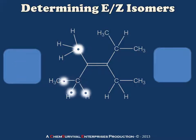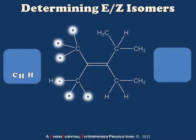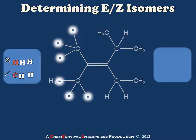Since there's a tie, I have to move out another bond. On the lower of the two groups, this gives me a list of atoms: C, H, H. On the upper of the two groups, the list is H, H, H. Lining each list up in order of decreasing atomic number, I immediately have a solution: the carbon in the lower group's list makes it higher priority. So I'll put a green box around this to indicate that's my higher priority group on this side.